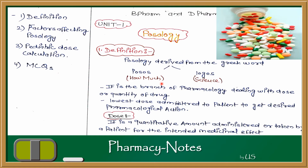How much dose is given to the patient so that a pharmacological action can be produced — this is the branch of pharmacology dealing with the dose or quantity of drug. The lowest dose administered to get the desired pharmacological action. For example, with paracetamol, the minimum dose which reduces fever — that quantity given to the patient is posology.